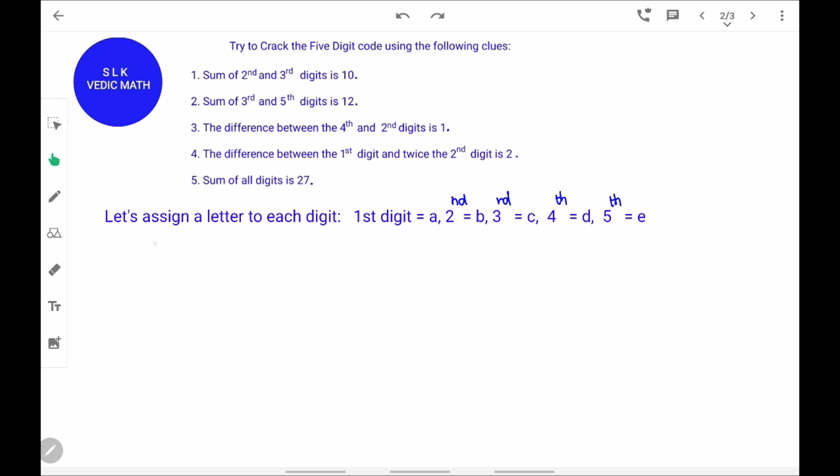First, let's assign a letter to each digit: A, B, C, D and E. In the first clue, it says sum of 2nd and 3rd digit is 10. So, B plus C equal to 10.